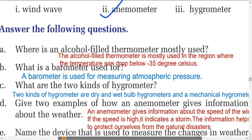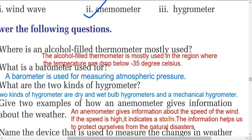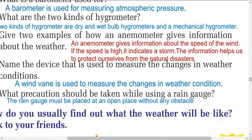Give two examples of how an anemometer gives information about the weather. An anemometer gives information about the speed of the wind. If the speed of the wind is high, it indicates a storm. This information helps us protect ourselves from natural disasters.